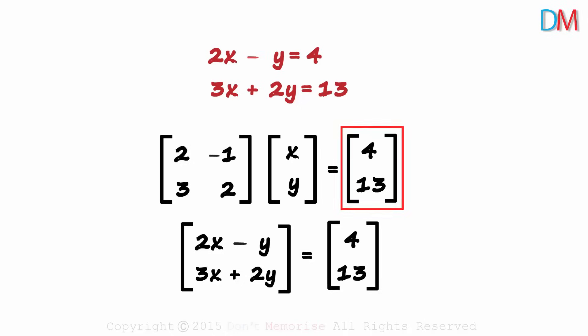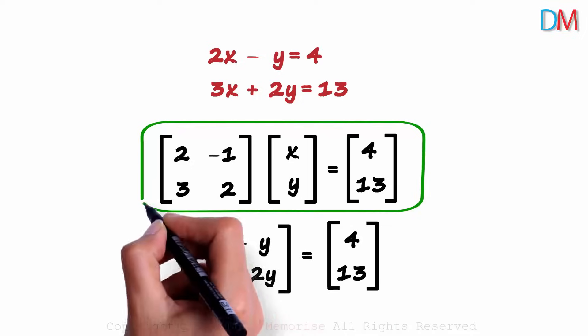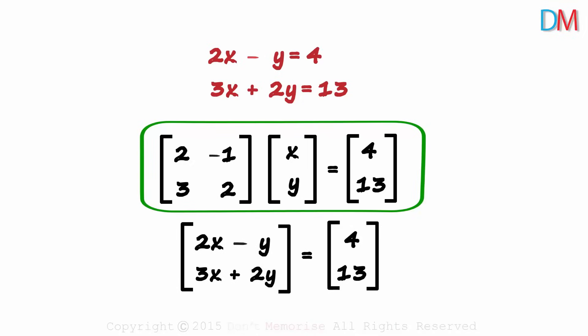And this matrix will be written as is. Now you see why this is the matrix form of the system of equations. As these two matrices are equal, we can say that 2x minus y will equal 4 and 3x plus 2y will equal 13. Same as these two equations.